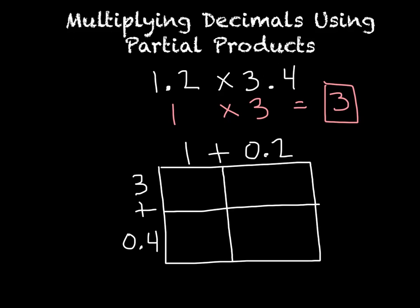That divides my box just where I need it to be. Then I'm going to start to multiply. So my first little box, we're going to do 3 times 1, so that shouldn't be too hard for most of us, is 3.